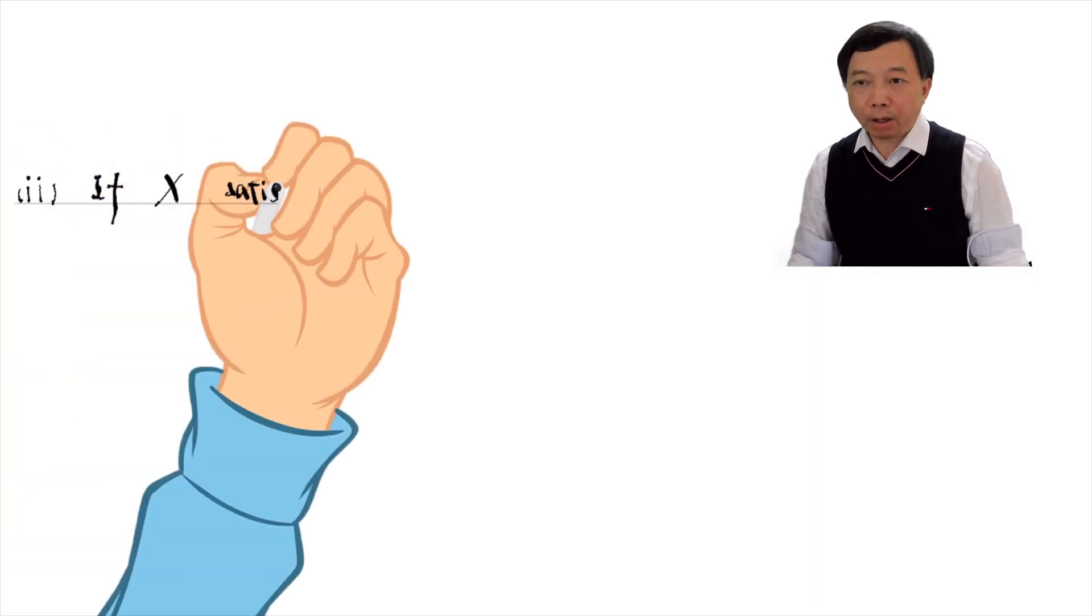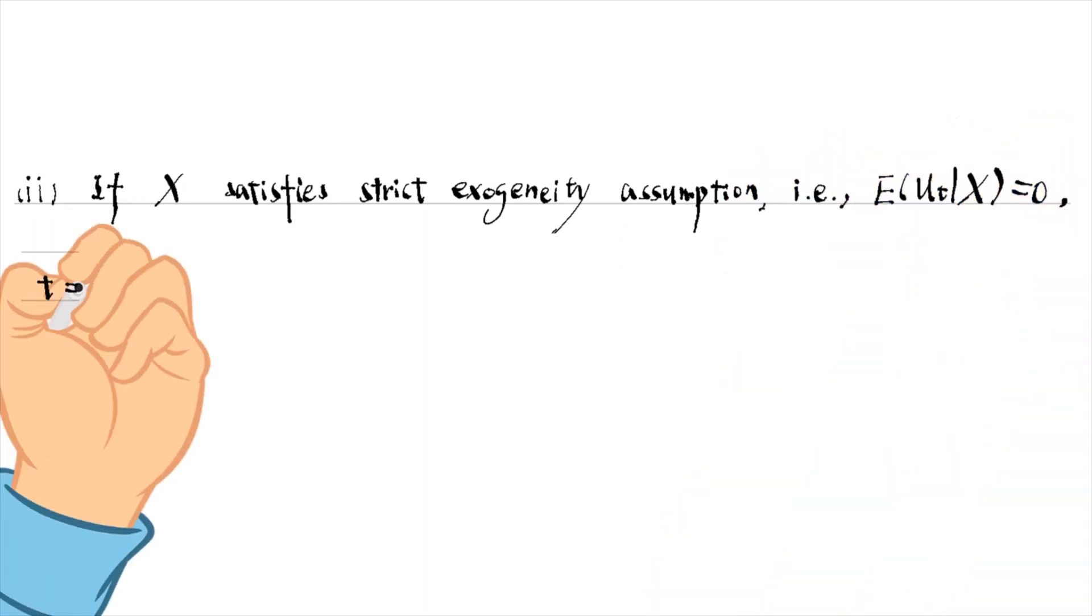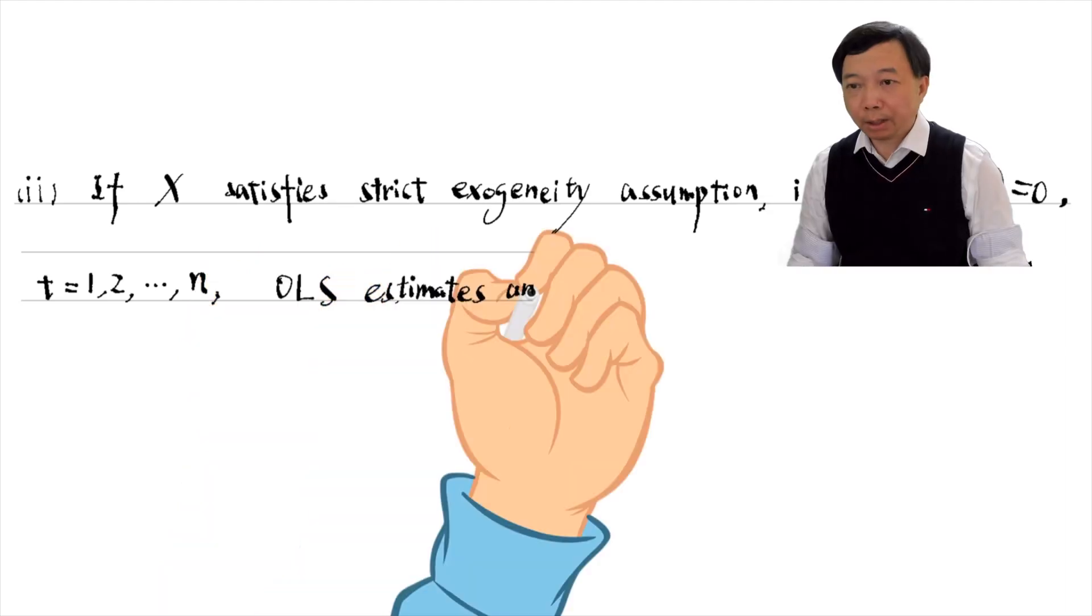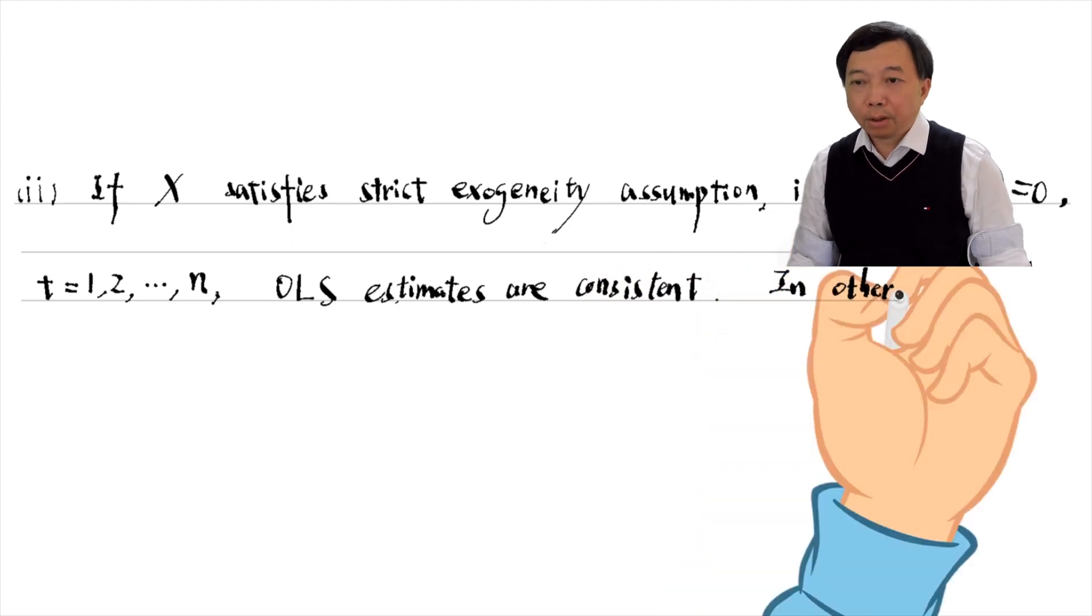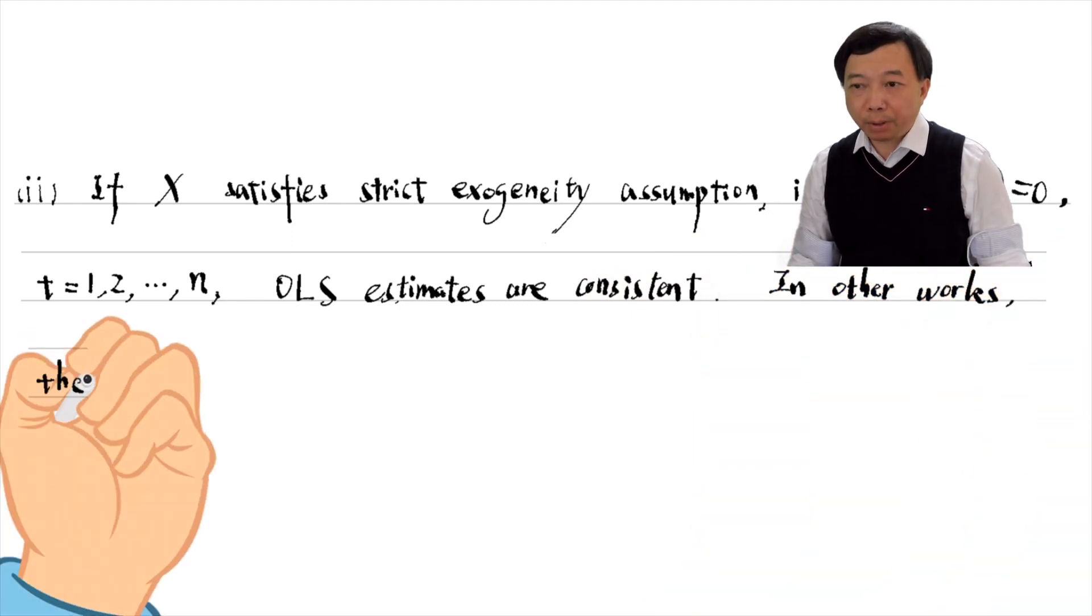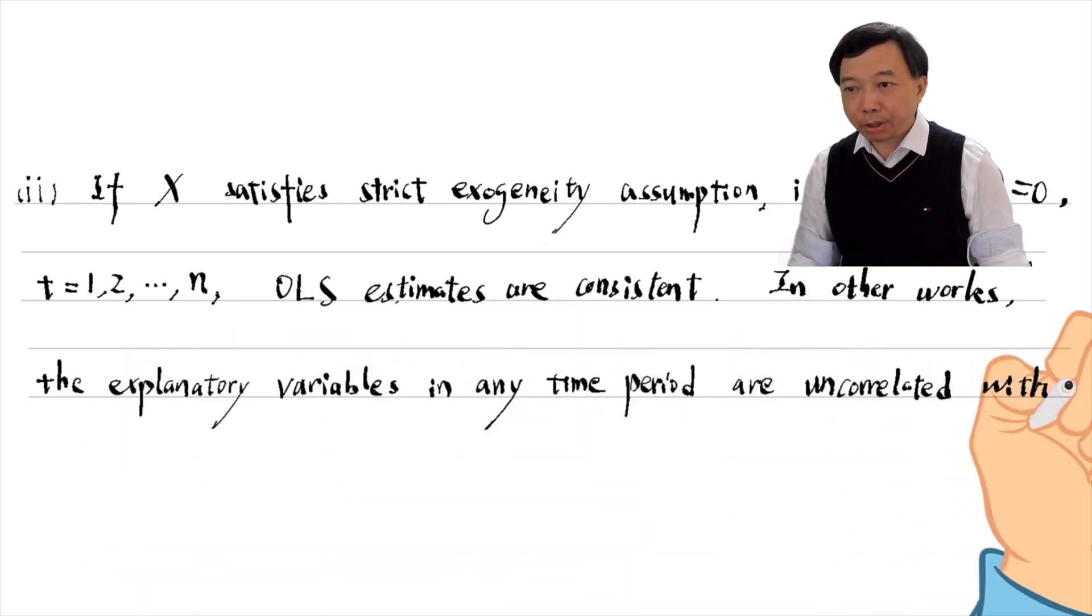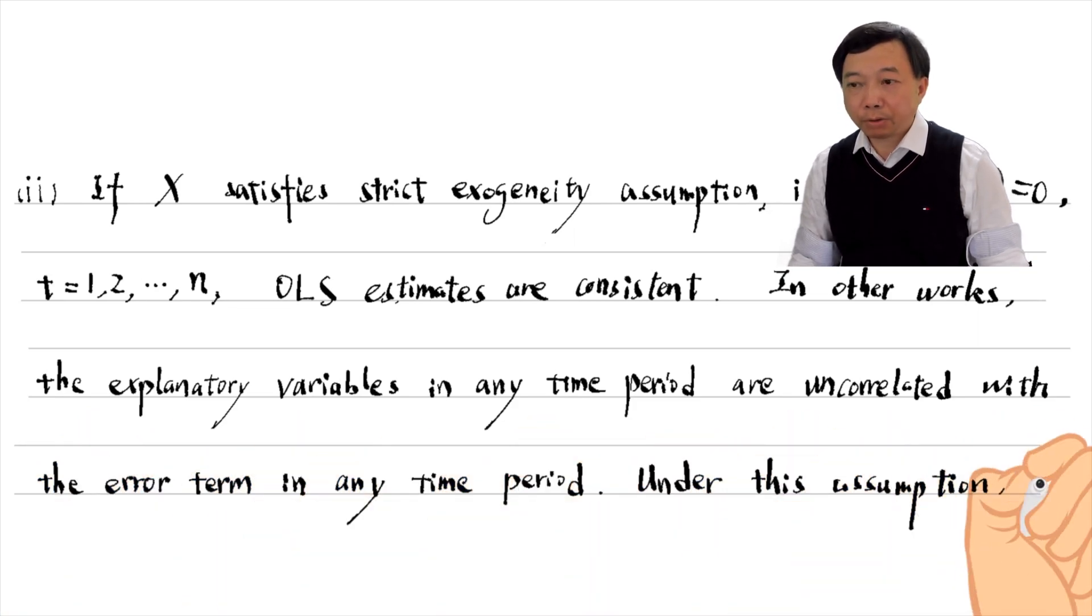If x satisfies the strict exogeneity assumption, that is, for each time period t, the expected value of the error term mu given the explanatory variables for all time periods is 0, then OLS estimates are consistent. In other words, the explanatory variables in any time period are uncorrelated with the error term in any time period. Under this assumption, the covariance between delta mu and delta x is 0.